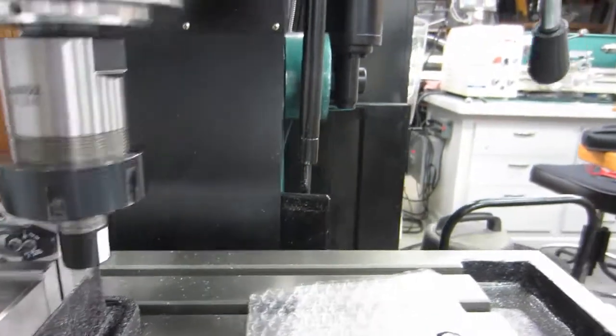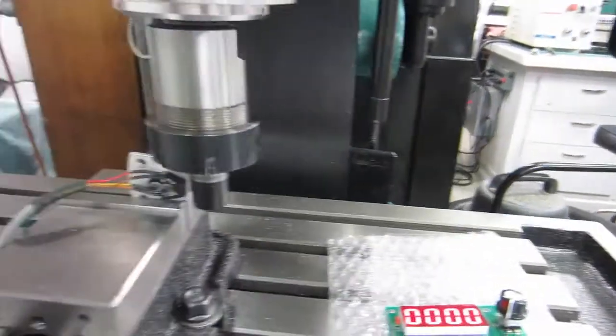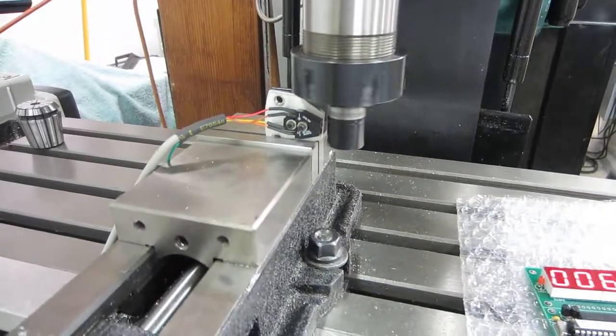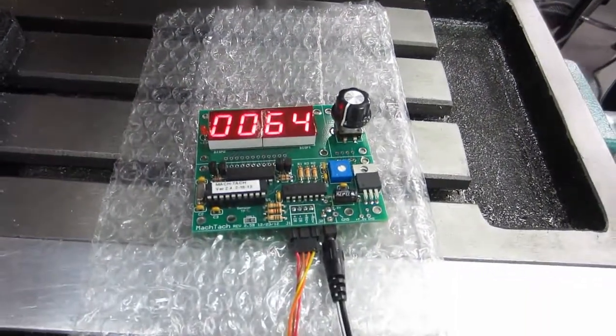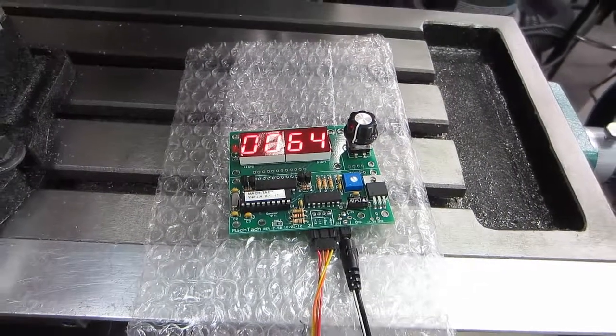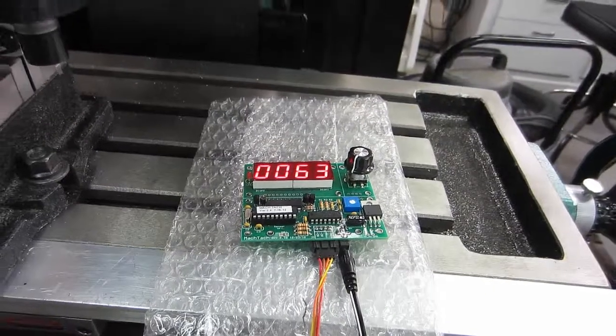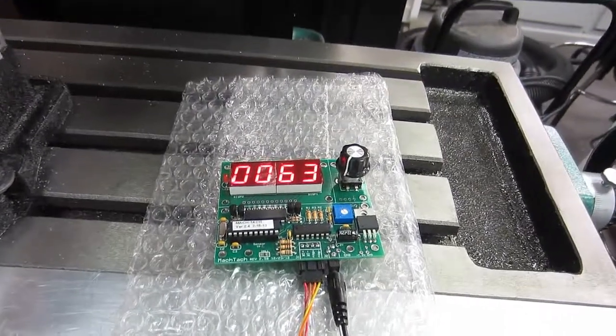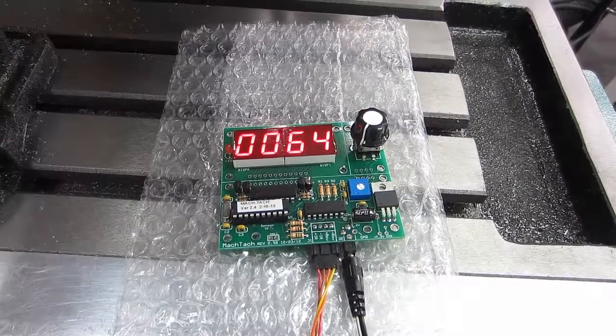So we'll go ahead and turn this on. And you can see it's turning very slowly. And in fact it's 64 RPMs. Now I'm going to switch over to the customer MacTac that came back and see if it does the same. I'll leave the RPM setting the same.